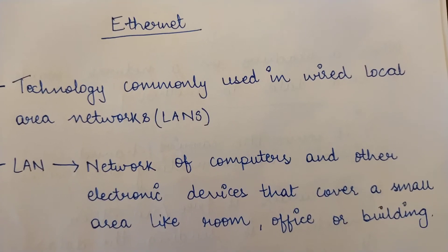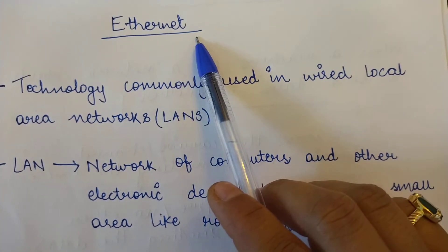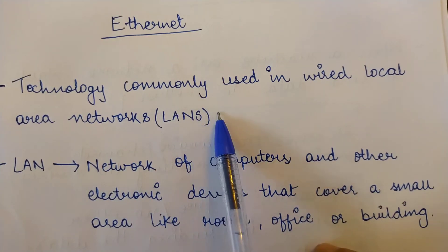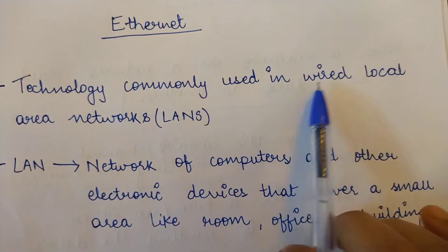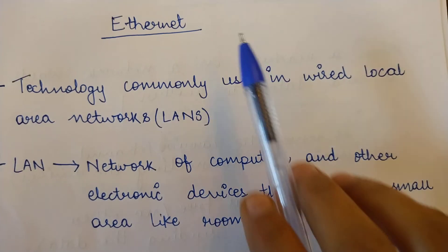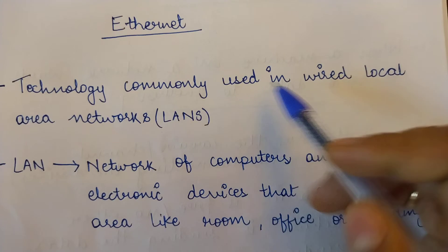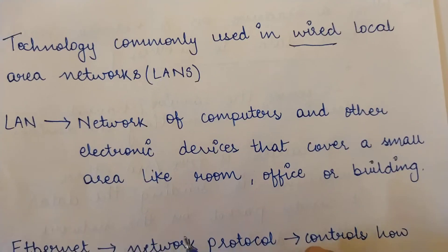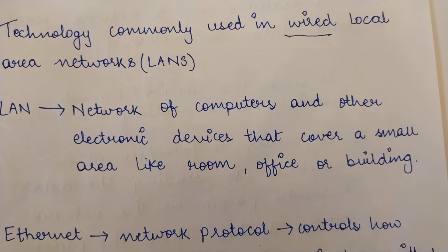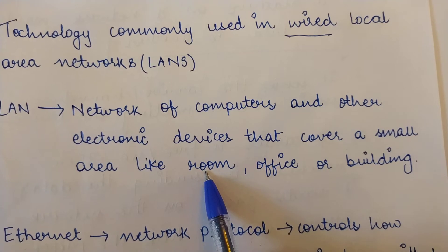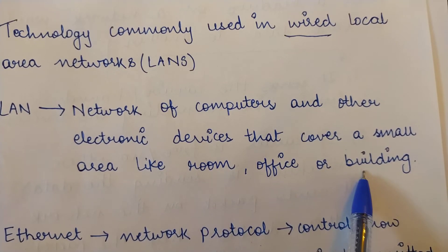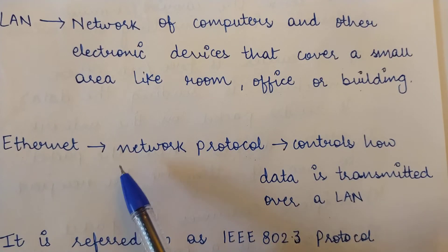The example network we are going to study today is Ethernet. Ethernet is basically a technology that is commonly used in local area networks, or LANs, which are wired. There are two types of LANs: wired and wireless. Ethernet is used in wired LANs. A LAN is a network that helps connect computers in a comparatively smaller geographical area, covering a room, office, or a building.